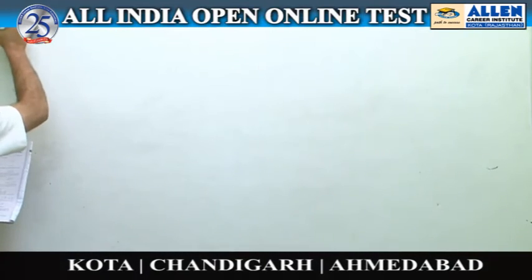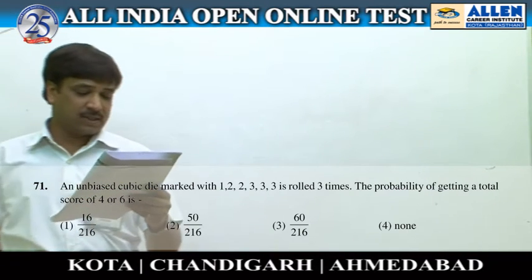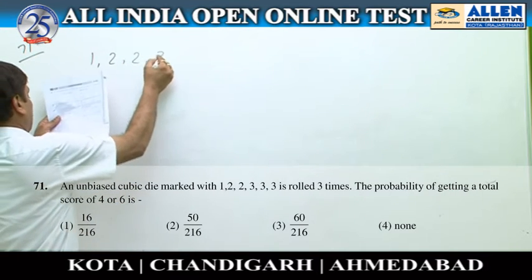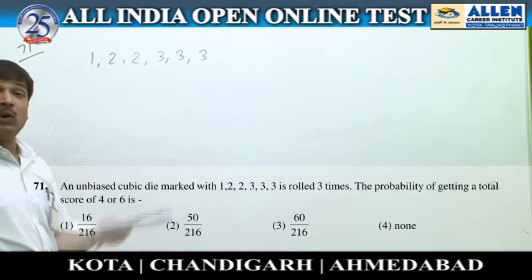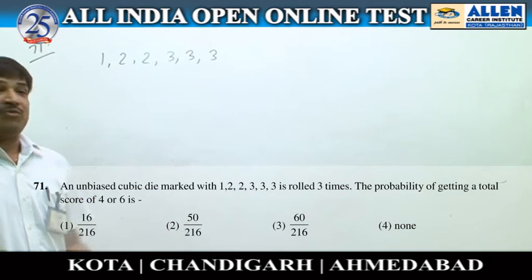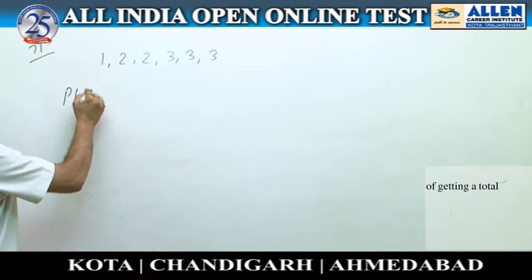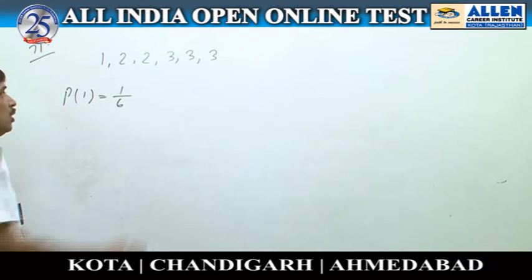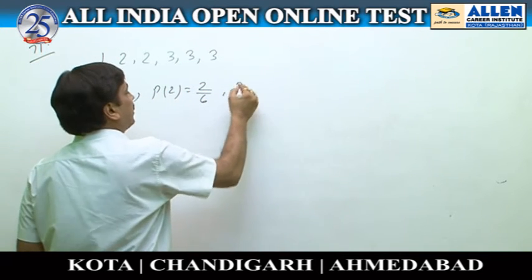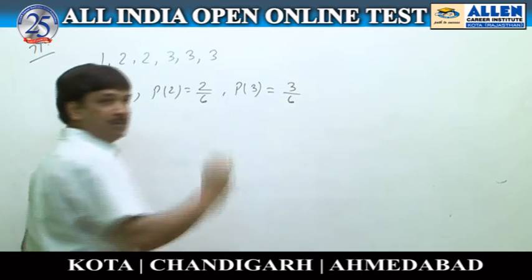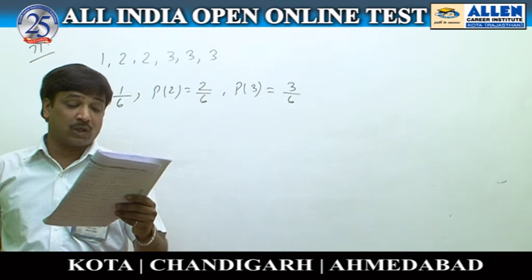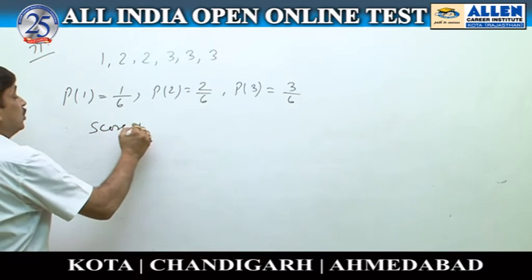Question number 71. An unbiased cubic die marked with 1, 2, 2, 3, 3, 3 is rolled 3 times. Find the probability of getting a total score of 4 or 6. The probability of getting 1 is 1/6, probability of getting 2 is 2/6, and probability of getting 3 is 3/6. The die is thrown 3 times and we need the probability of a total score of 4 or 6.